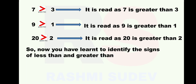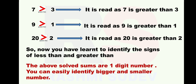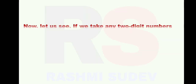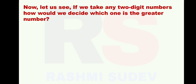Now you have learnt to identify the sign of less than and greater than. Till now you circled the smaller number, then the bigger number, and then you learnt to identify the less than sign and the greater than sign. The above solved sums are one-digit numbers, so you can easily identify which is bigger and which is smaller. Now let us see, if we take any two-digit numbers, how will we decide which one is the greater number?